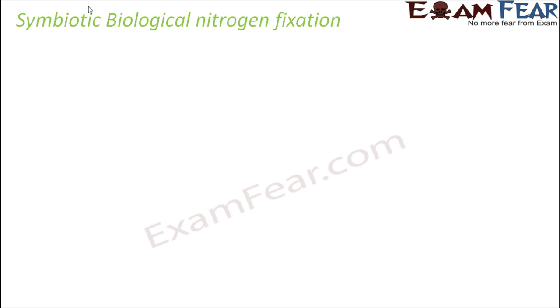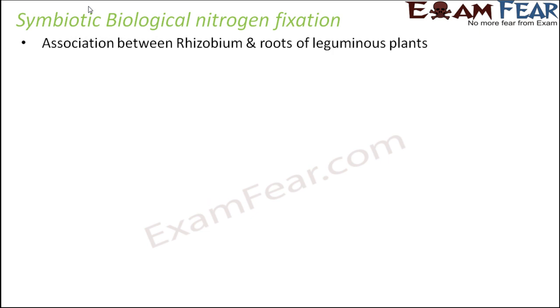On similar lines, we are now going to talk about symbiotic biological nitrogen fixation. The process of nitrogen fixation is all about converting atmospheric nitrogen into ammonia, but that is done by living organisms — therefore it is biological. It is done by organisms which share a symbiotic relationship with another organism, which is why it is symbiotic as well. Here we will talk about the association between the bacteria rhizobium and the roots of leguminous plants, which helps in nitrogen fixation.